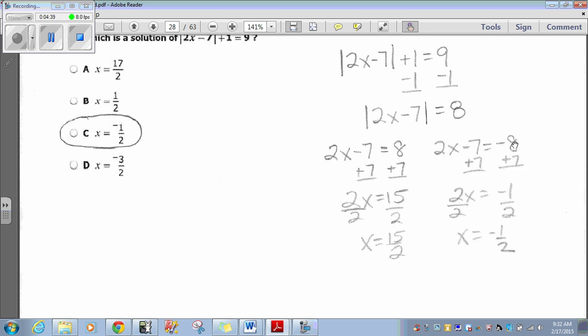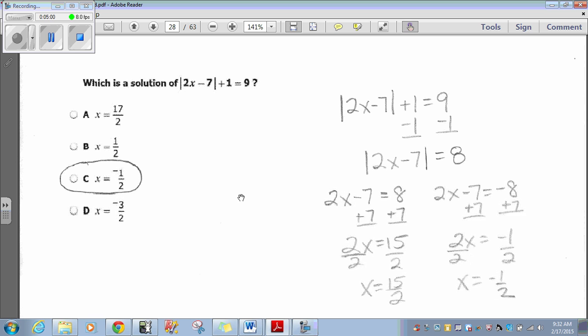2x minus 7 equals 8. 2x minus 7 equals negative 8. In both cases, we're adding 7 to both sides. Here, 2x equals 15 divided by 2x is 15 halves. Here, adding 7 to both sides. 2x equals negative 1 divided by x equals negative 1 half. So, our answers are 15 halves and negative 1 half. And the only one that fits that criteria is option C, negative 1 half.